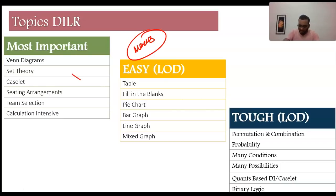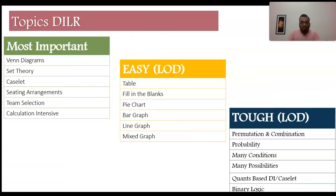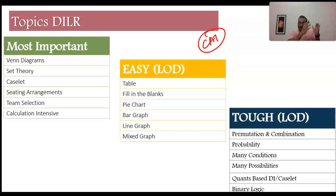In mocks, it's not always possible to get all three levels in one paper. Mocks can be extreme — one calculation set, one Venn diagram set, one seating arrangement set, and the rest modern DILR. Or the reverse: purely easy sets with only one modern one. But as far as the actual CAT is concerned, there is always a good bifurcation — some Venn diagram, some fill-in-the-blanks, some modern DILR, and a caselet.